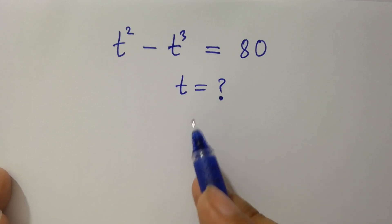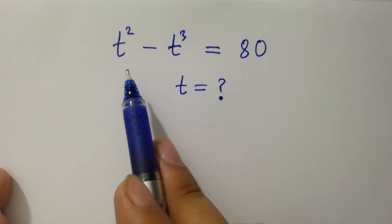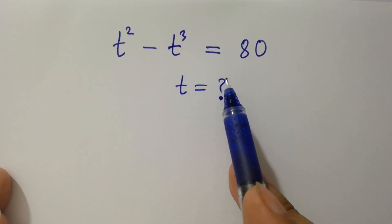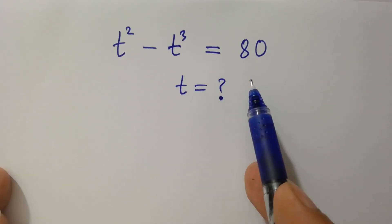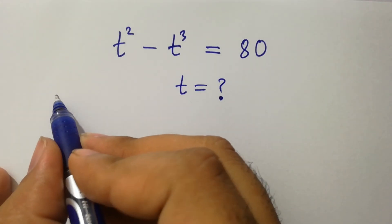Hello friends. Find the value of t if t squared minus t cubed equals 80. Let's have a solution.